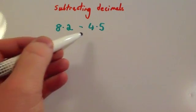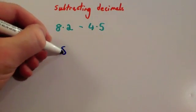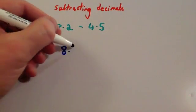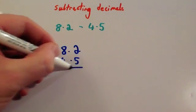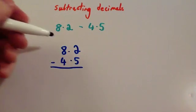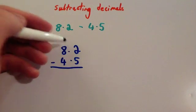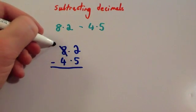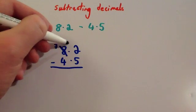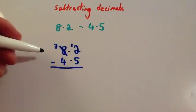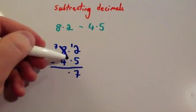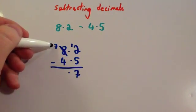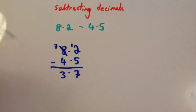Let's have a look at 8.2 subtract 4.5. Line them up, make sure that the first number goes on the top and the one you're subtracting goes beneath it. Line them up using the column method. 2 take away 5 you can't do, so you're going to need to borrow one from the 8 and make that a 7. Take the 1 and put it there to make it now 12. 12 subtract 5 would be 7. Put the decimal point there. And 7 subtract 4 is 3. So the answer would be 3.7.